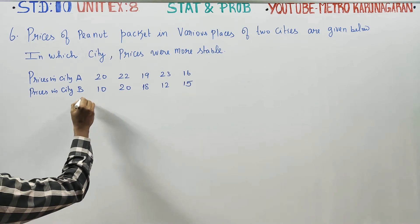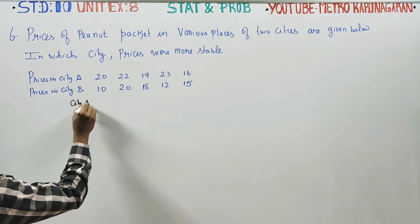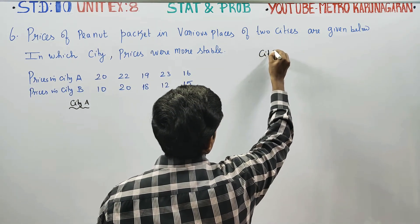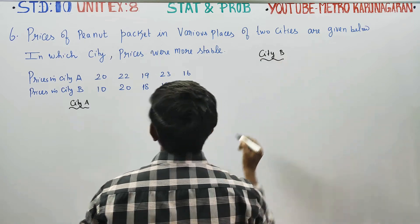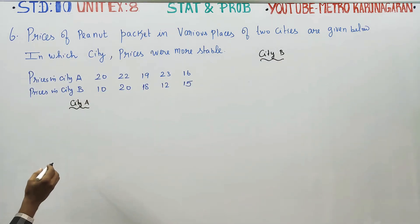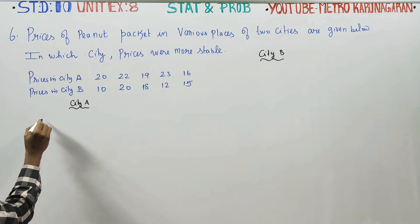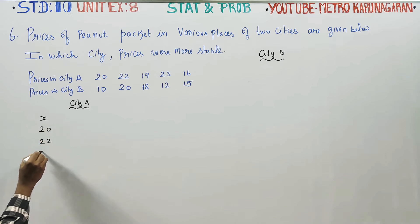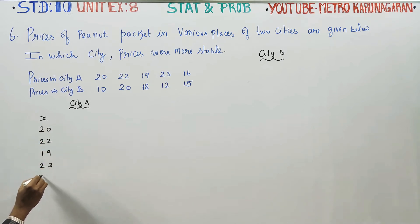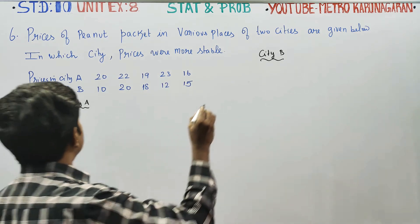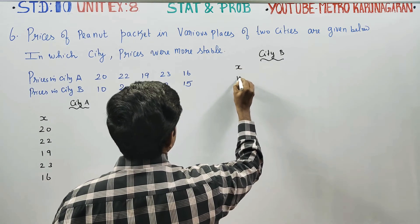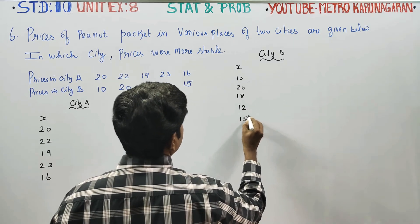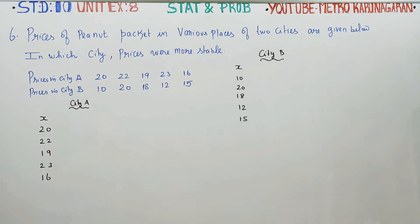We can start the sum with two headings: City A and City B. For City A, the values of X are: 20, 22, 19, 23, and 16. We need to determine which city's prices are more stable.